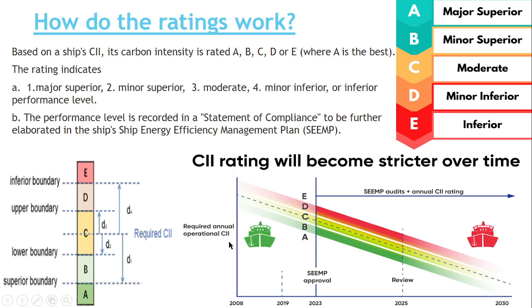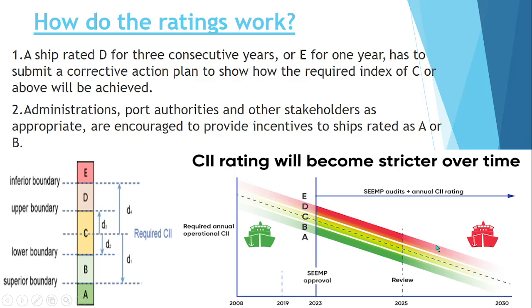There are five rating categories named: major superior (A), minor superior (B), moderate (C), minor inferior (D), and inferior (E). A is the best. If you are complying with CII, you will receive a Statement of Compliance (SOC) along with the DCS. The DCS measures whether your ship is compliant with CII, and you will be subjected to an audit along with the IMO DCS every year.